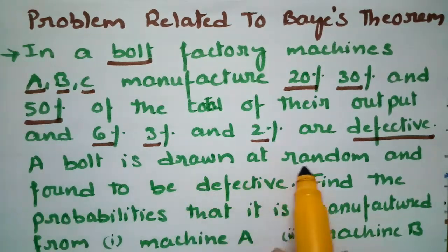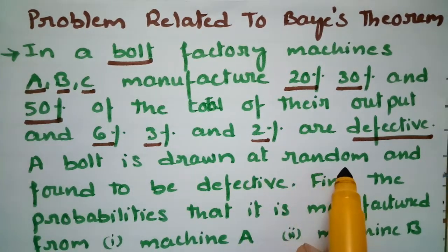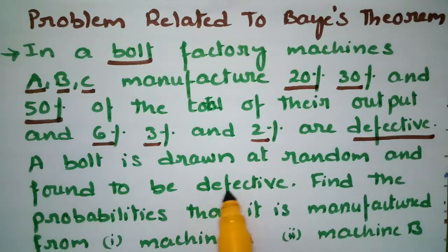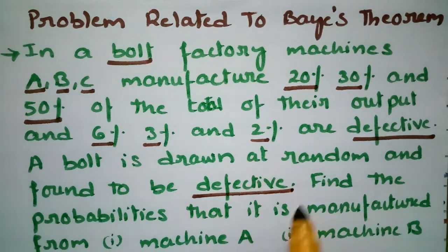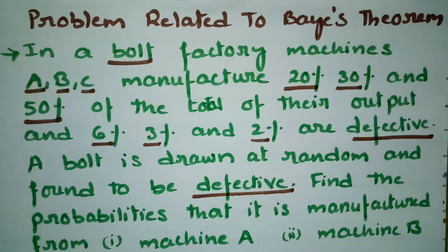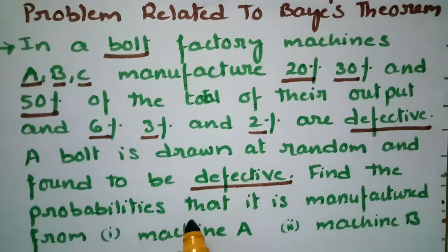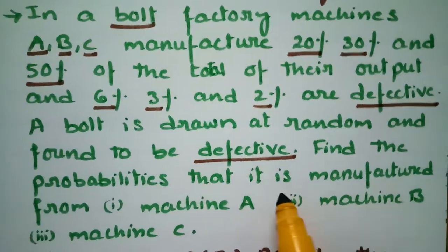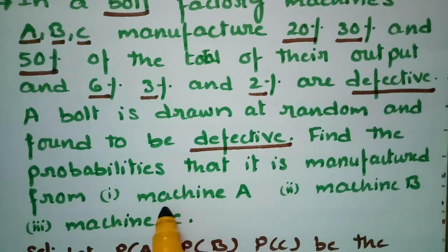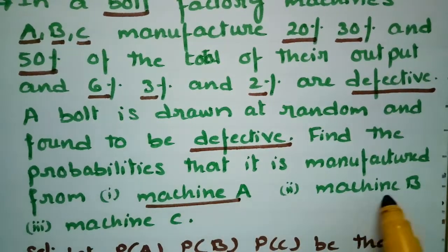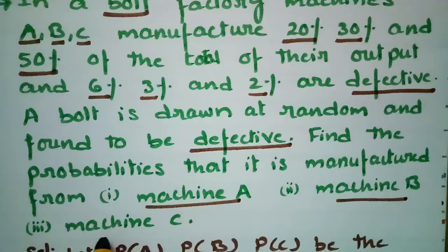A bolt is drawn at random and found to be defective. We need to find the probability that it is manufactured from machine A, machine B, and machine C.